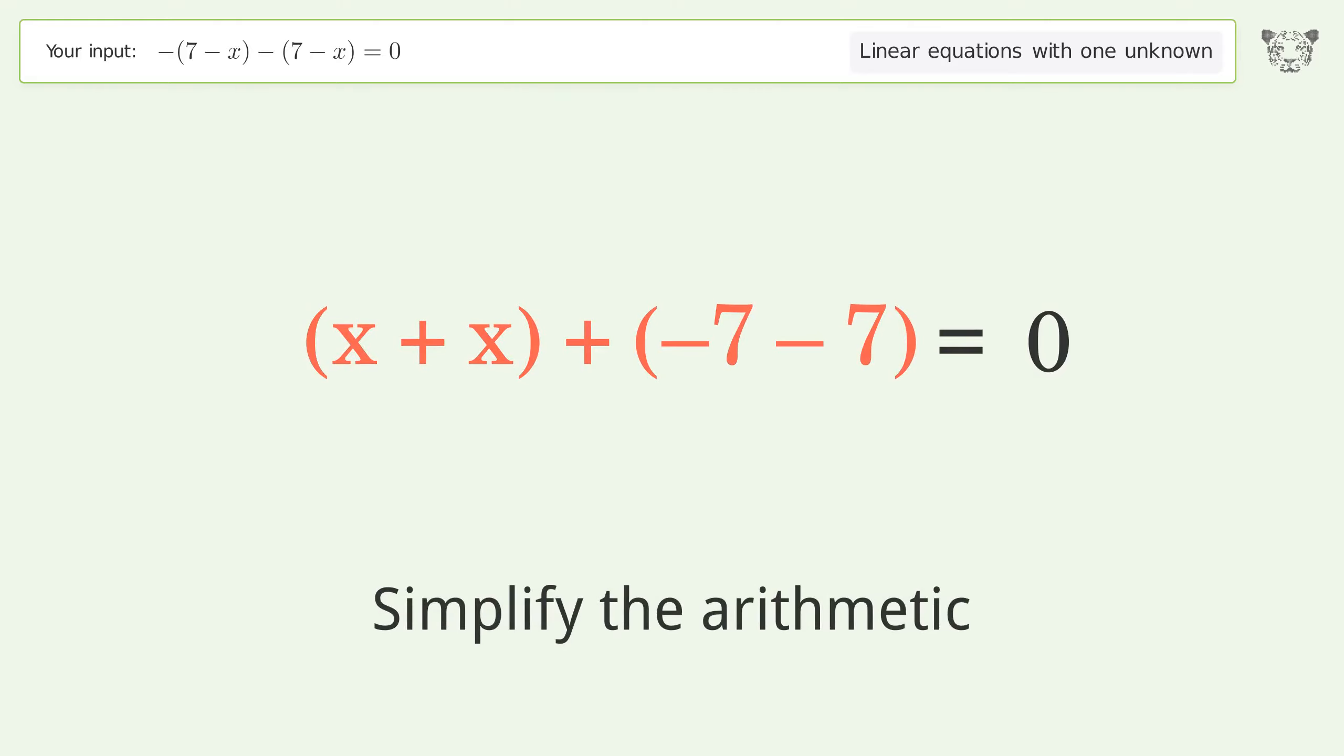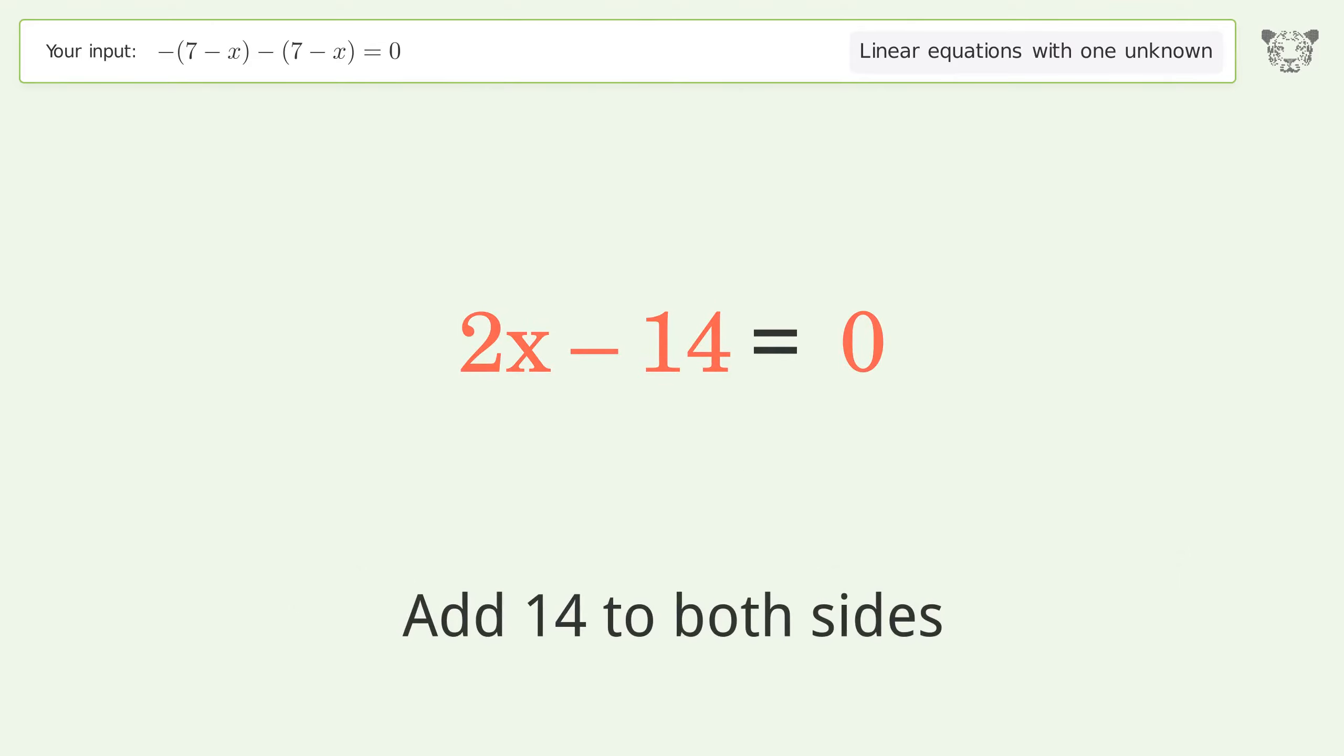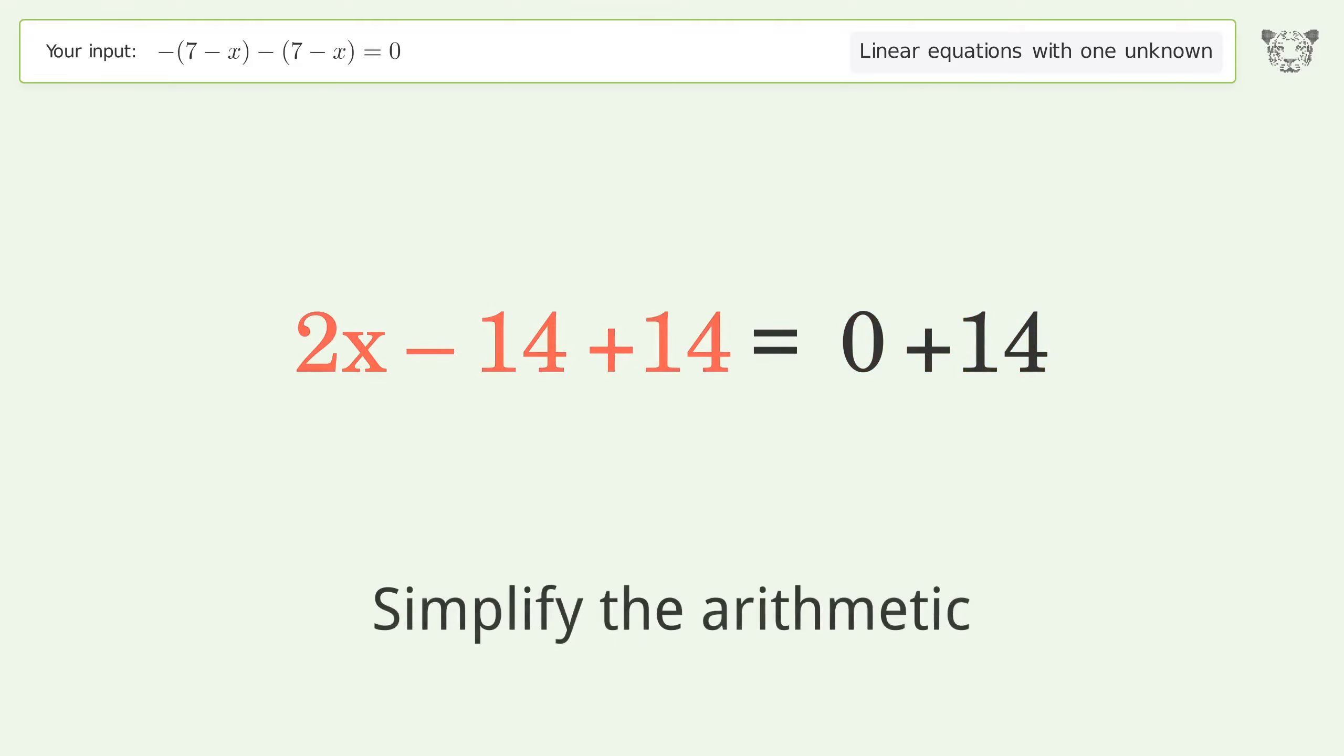Simplify the arithmetic. Group all constants on the right side of the equation. Add 14 to both sides. Simplify the arithmetic.